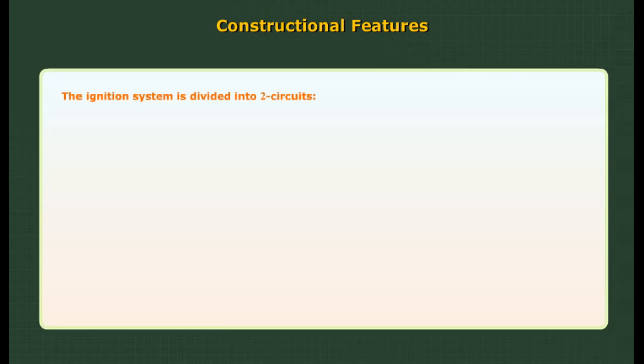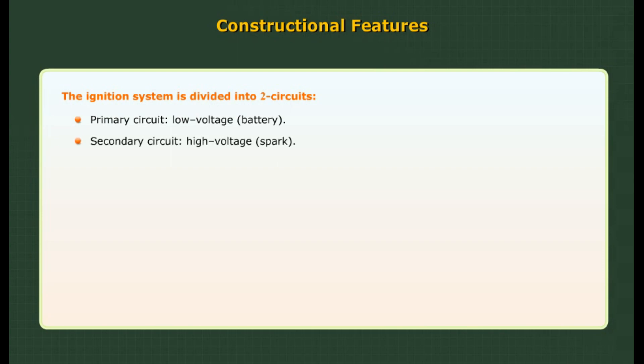Constructional features: The ignition system is divided into two circuits. The primary circuit operates at low voltage using the battery. The secondary circuit operates at high voltage to produce the spark.